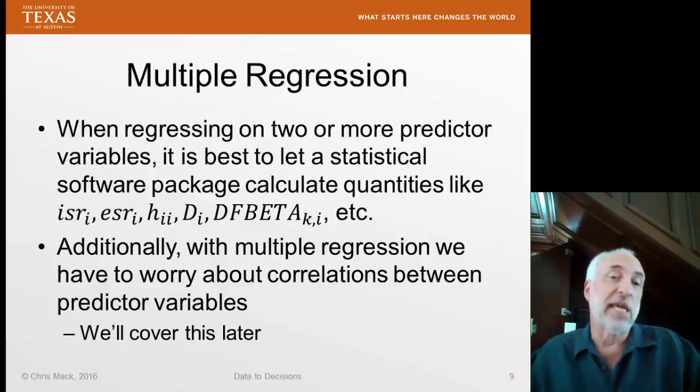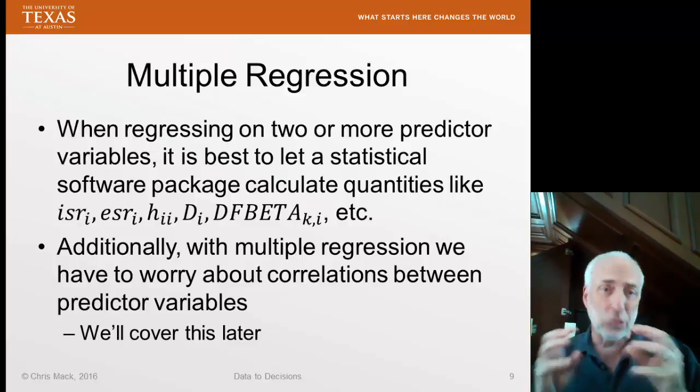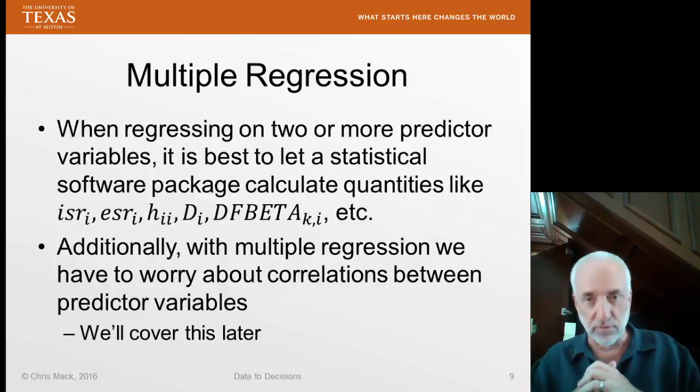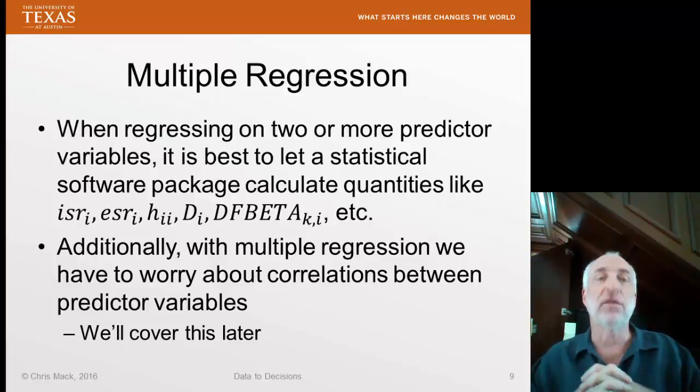Now, these are all easy to calculate if I have one regressor variable. Once I have two or more regressor variables, in other words, multiple regression, it really gets cumbersome to calculate these things by hand. So you're going to let your software package calculate all of these things for you. They'll often just spit out a table, everything. Or if you're working in R, you can just ask. There's another issue with multiple regression, which is the correlations between one predictor variable and another. Multicollinearity, it's called. So we're going to talk about that later, but that becomes another issue we worry about, specifically multiple regression.